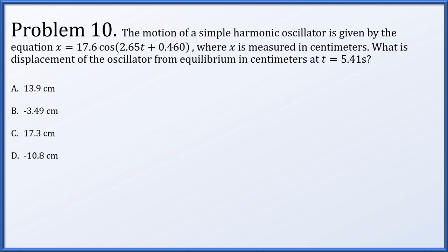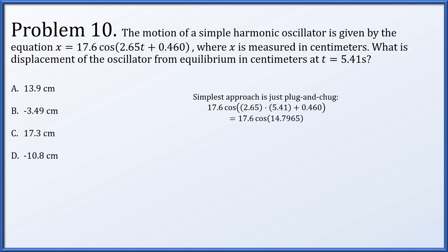Problem 10: the motion of a simple harmonic oscillator is given by x equals 17.6 times the cosine of 2.65t plus 0.460, where x is in centimeters. What is the displacement at t equals 5.41 seconds? We plug in t equals 5.41 to get 17.6 times the cosine of 14.7965. With the calculator in radians mode, this works out to about negative 10.78 centimeters — option D.